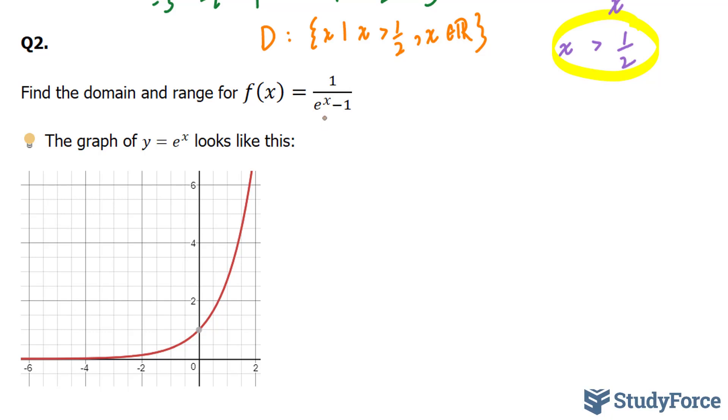Now, like always, the denominator cannot equal to 0, so we're going to set e to the power of x minus 1 cannot equal to 0. So I'm going to bring this over. We end up with e to the power of x cannot equal to 1. And to solve for x, what we're going to do is ln both sides. Ln-ing the e gets rid of that e.